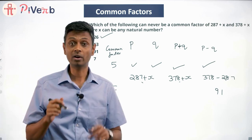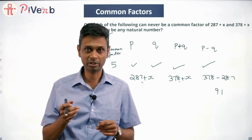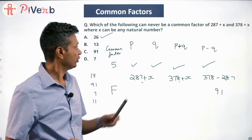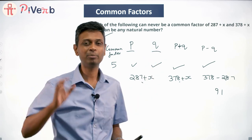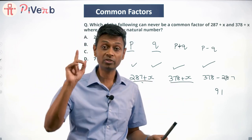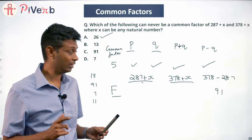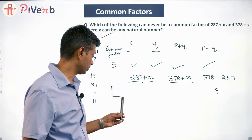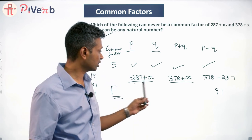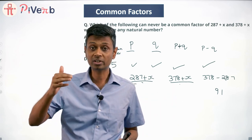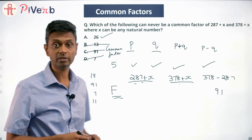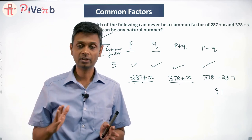This mechanism is needed for trickier versions where you can't just use odd/even reasoning. The key idea: if f divides both numbers, then f divides 91. Now, 91 = 13 × 7. So 7, 13, and 91 are all factors of 91 — those choices are eliminated. But 26 is NOT a factor of 91, so 26 cannot be a common factor of both expressions for any value of x. Therefore 26 is the correct answer.